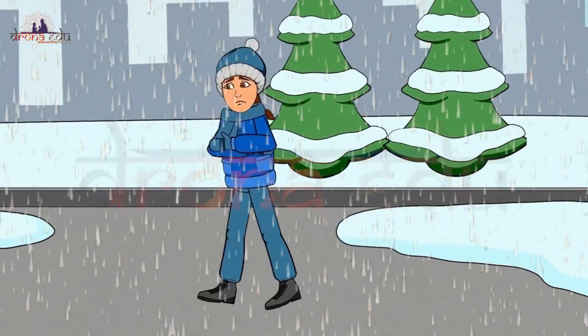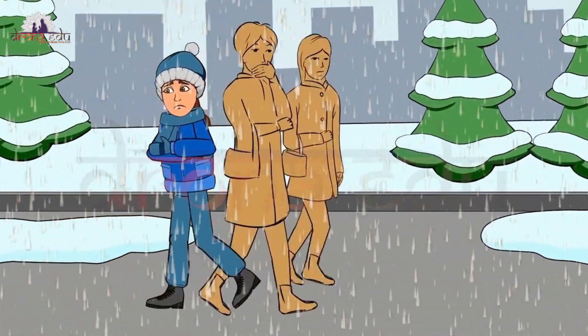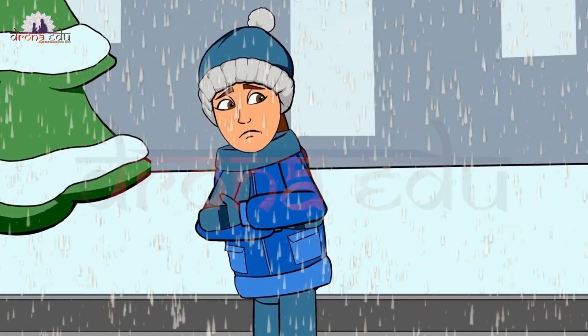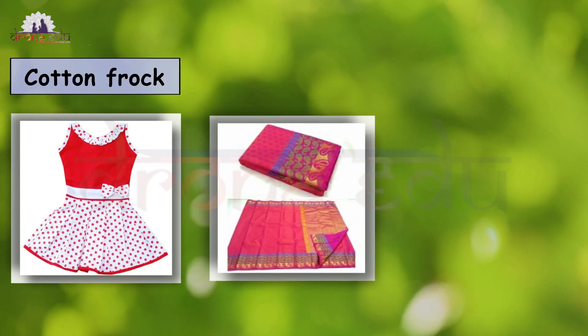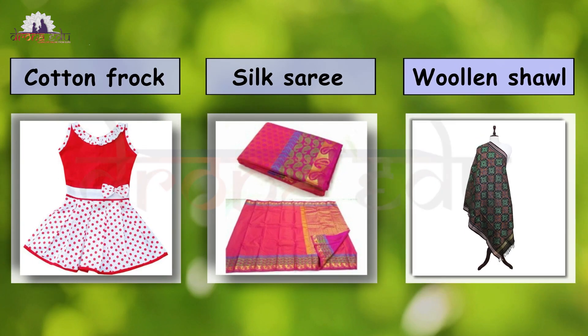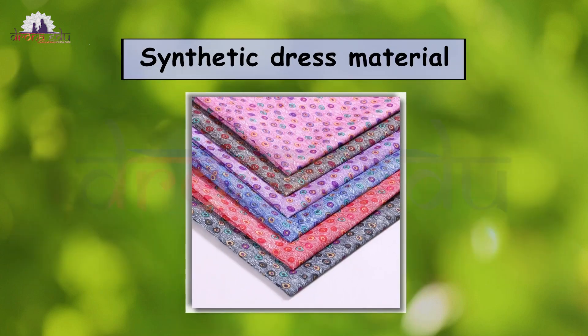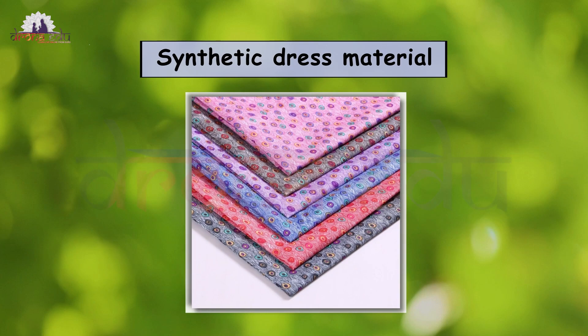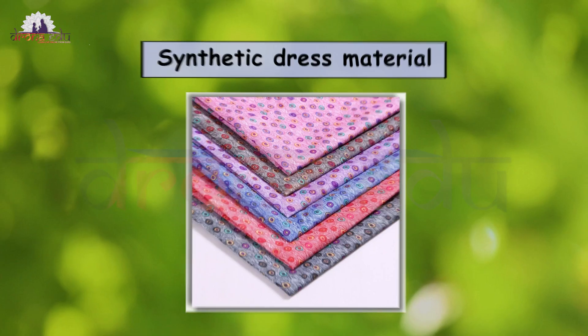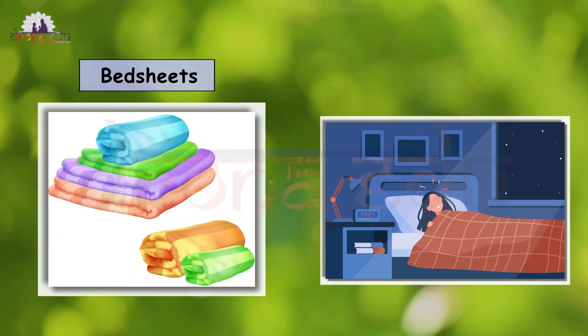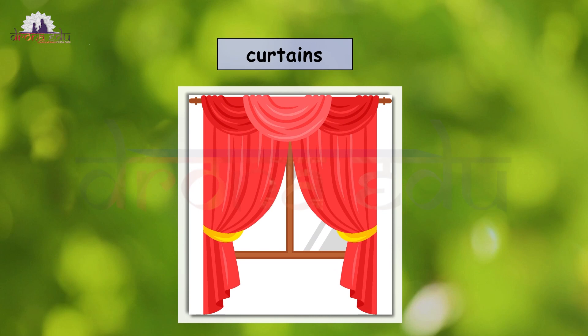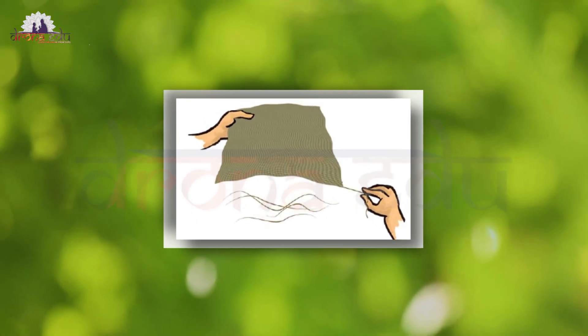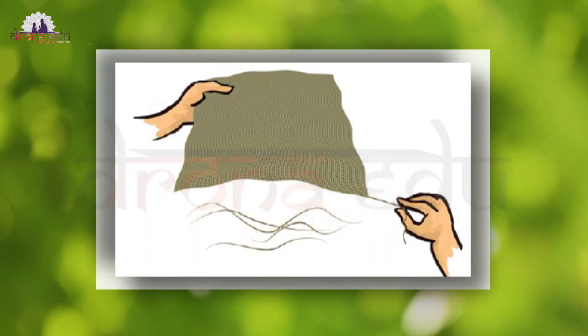Whenever you go to purchase clothes, you might have observed your mother asking the shopkeeper to give her a cotton frock, silk saree, a woolen shawl, or a synthetic dress material. Similarly, all the clothes around you — like bedsheets, blankets, curtains, and towels — are all made of different fabrics.